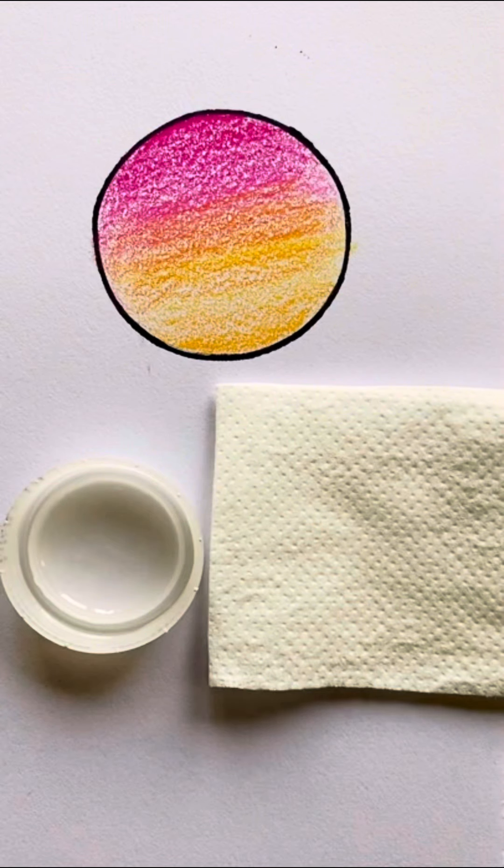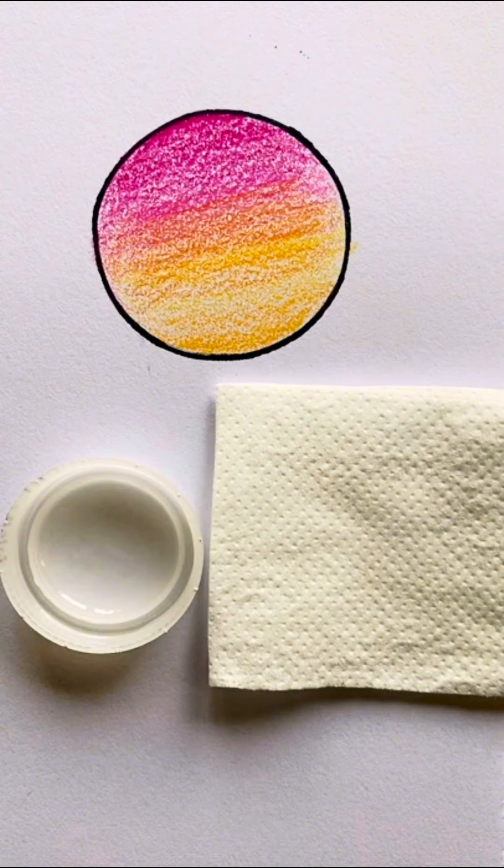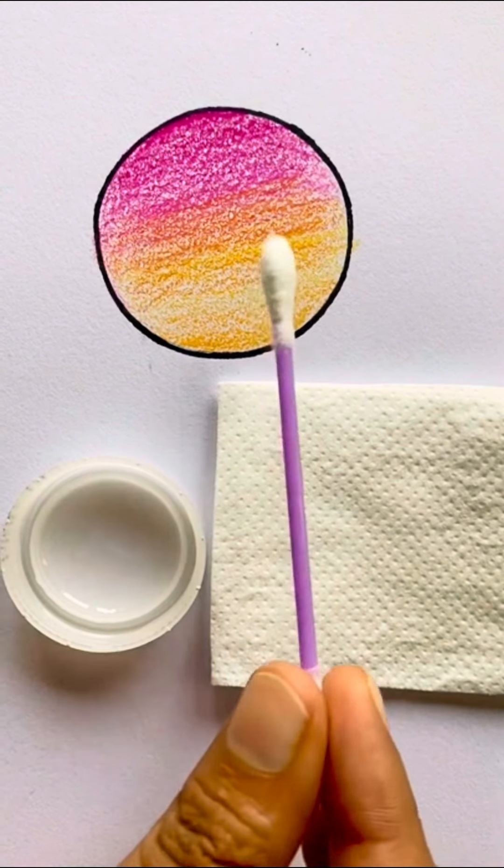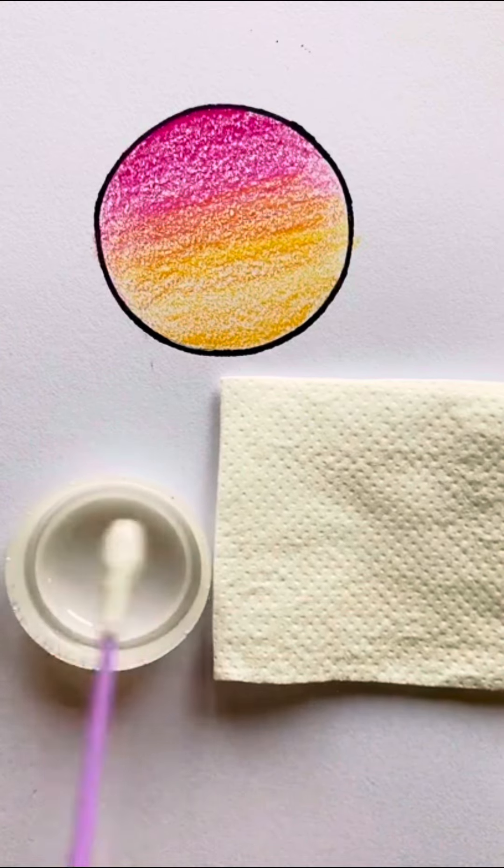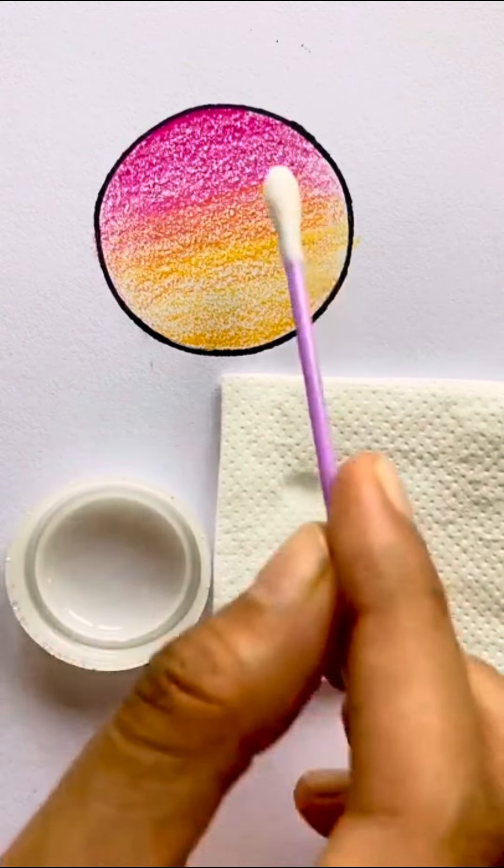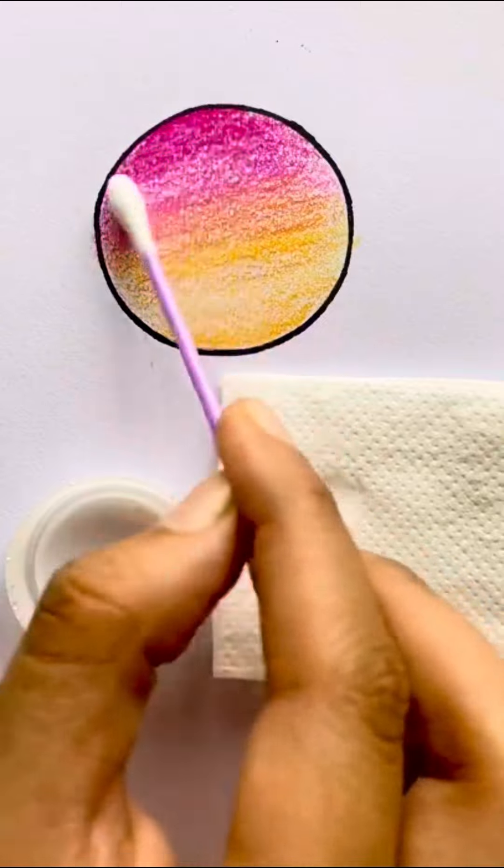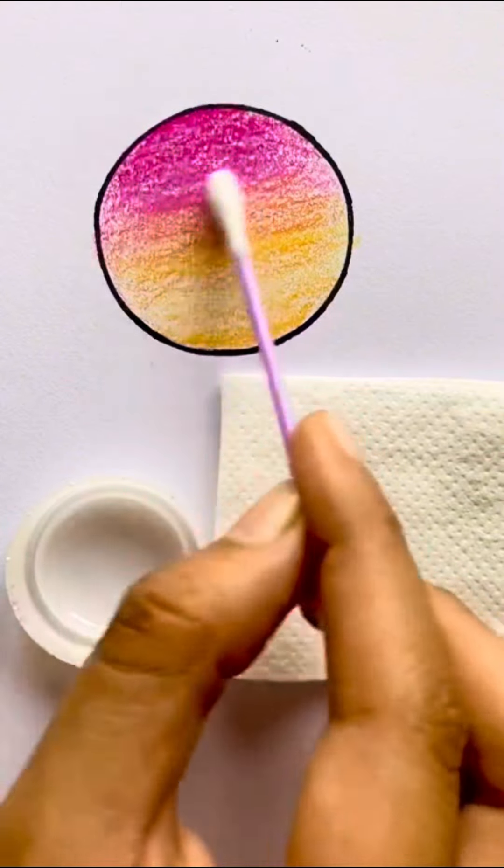You can use a solvent such as baby oil to blend. I know this tip works with Prismacolors, but I'm not sure if it works with every brand of color pencil. So to use this hack, just dip a brush or q-tip in baby oil and wipe the excess on a tissue. If you're using a q-tip, then apply it in circular motion and keep rotating the q-tip.